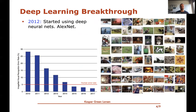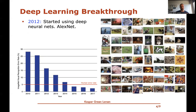The real breakthrough in deep learning happened in 2012, when AlexNet — a particular neural network trained on the ImageNet dataset — was introduced. Before 2012, the best-performing algorithms were hard-coded rules made by humans, achieving around 25% error on the top-five outputs. Then suddenly in 2012 there was a huge improvement, dropping from over 25% to almost 15% error. This is when deep neural networks started being used for image recognition.